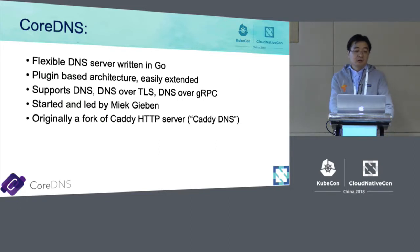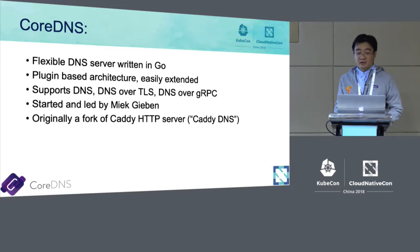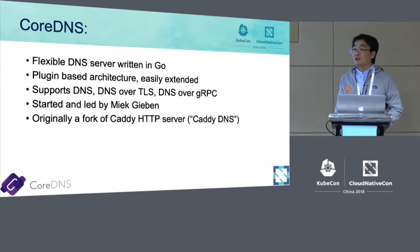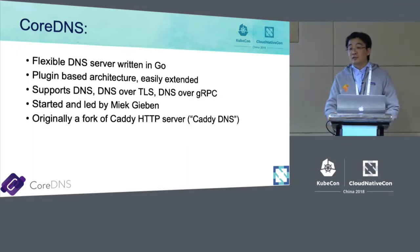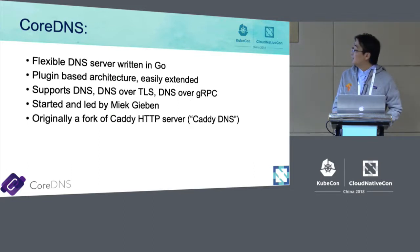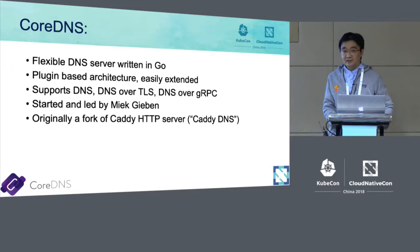CoreDNS is a very flexible DNS server written in Go. The very special thing about CoreDNS is that it's plugin-based architecture — every functionality is one plugin. That allows you to easily extend CoreDNS functionalities with new customized plugins, as long as you know how to write Go. CoreDNS supports traditional DNS functionalities like DNS over TLS. It also supports DNS over gRPC. DNS over gRPC is not a DNS standard — it's a customized implementation of CoreDNS — but it helps a lot in a cloud-native environment.